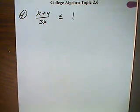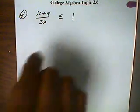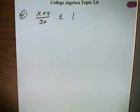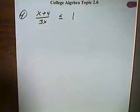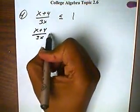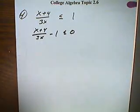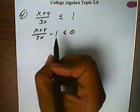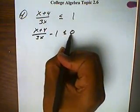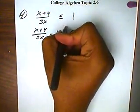First of all, we want to set this equal to 0, or set this side equal to 0. So we're going to bring the 1 over to the other side. This will become x plus 4 all over 3x minus 1, less than or equal to 0. And now, from here, we establish that since this term right here is less than 0, numbers that are less than 0 are negative numbers.